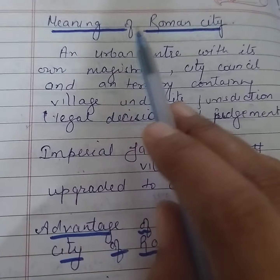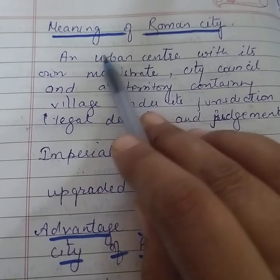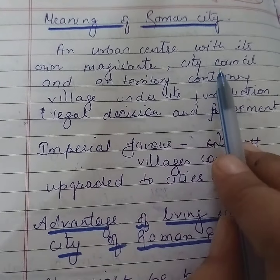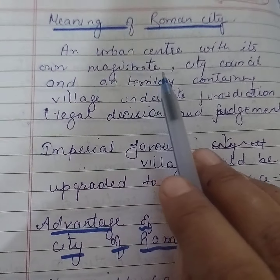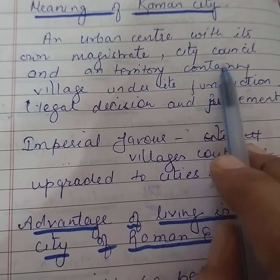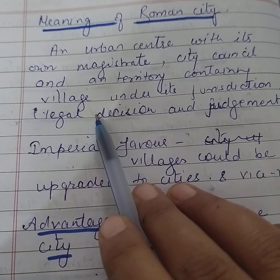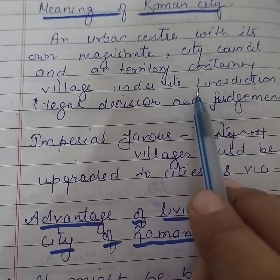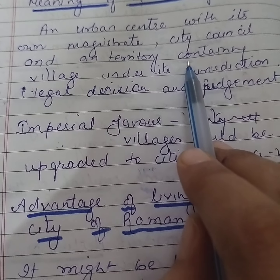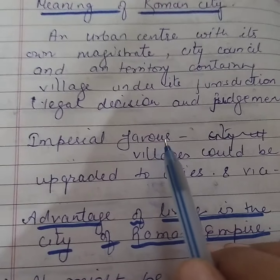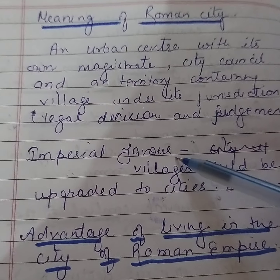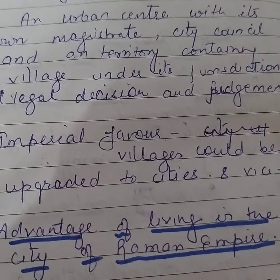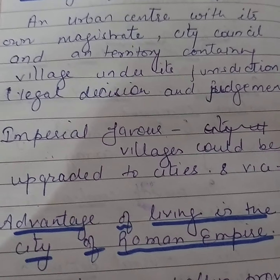A city in the Roman sense was an urban center with its own magistrate, its city council, and a territory containing villages under its jurisdiction, where legal decisions and judgments were made. In the case of imperial favor — the favor of the ruler — any town could be given the status of a village, and a village could be upgraded to a city.